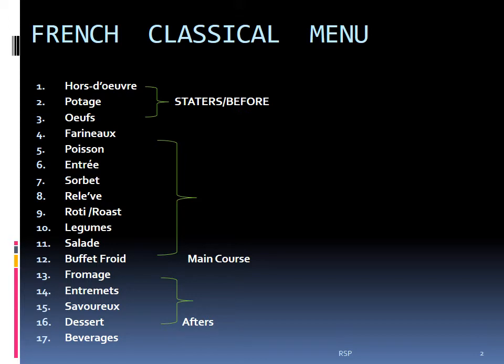Before we begin today's session, let's revise the French classical menu sequence: hors d'oeuvres, potage, œufs, farinaceous, poisson, entrée, sorbet, relevé, rôti, légumes, salad, buffet froid, fromage, entremets, savory, dessert, and beverages. The potage and hors d'oeuvres are the starters. Farinaceous, poisson, entrée, sorbet, relevé, rôti, légumes, salad, and buffet froid fall under the main part. Fromage, entremets, savory, dessert, and beverages are the afters or ending courses.